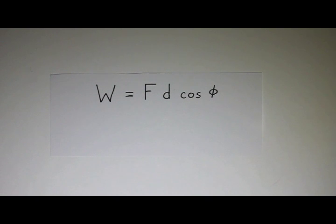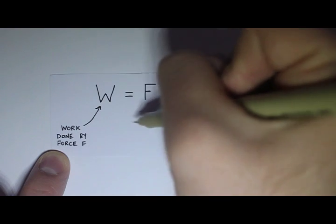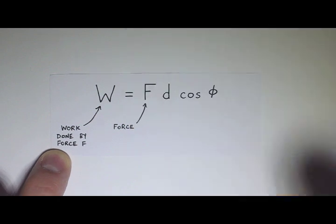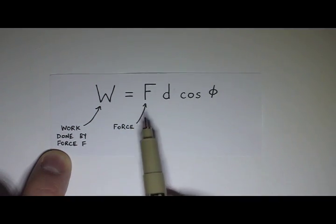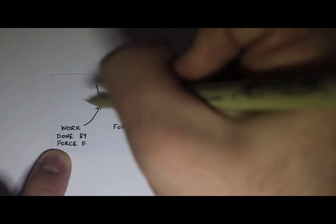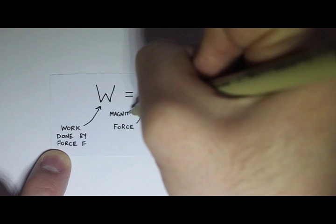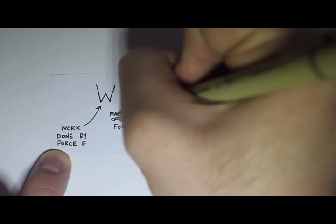So W I said was work, and in particular this is work done by force F. We have our force labeled as F in this formula. This is the work done by that force. And actually, I should specify, this is the magnitude of the force. So force is a vector, this is just its length, that's the magnitude of the force.